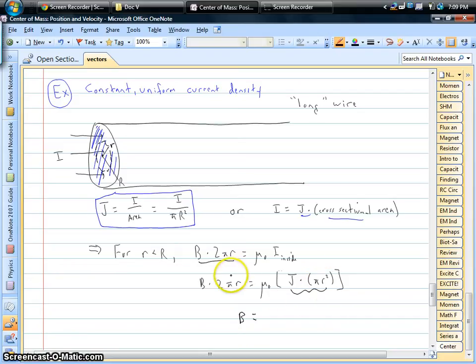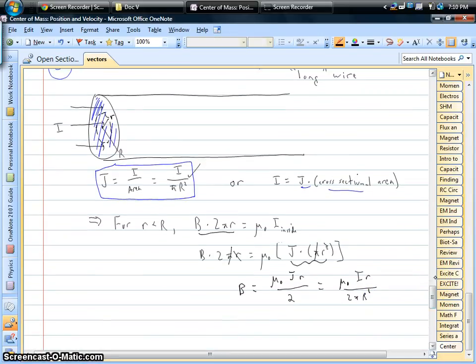Things will simplify a little bit. The pi is going to drop out. One of the little r's is going to drop out. And so we're going to have mu times j times a little r on top divided by 2. If we wanted to, we could substitute in our definition for j, for its current density. And so we'd have mu times the current times the little r on top. And then we'd have 2 pi big R squared in our denominator. And so the magnetic field would be linear with radius. There's no magnetism right at the center of the wire because of symmetry.